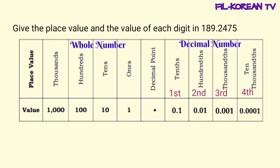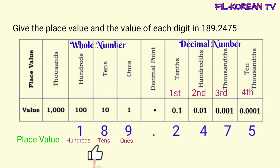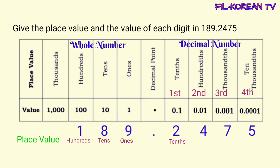Isulat natin yung given number dito sa chart para mabilis nating makita yung place value ng bawat digit. Tingnan natin yung bawat digit galing sa decimal point. Yung first digit sa kaliwa ng decimal point ay nine — ang place value ng nine ay ones. Ang place value ng eight ay tens. At ang place value ng one ay hundreds. Tingnan naman natin ang bawat digit sa kanan ng decimal point. Ang first digit sa kanan ng decimal point ay two — ang place value ng two ay tenths. Ang place value ng four ay hundredths. Ang place value ng seven ay thousandths. At ang place value ng five ay ten thousandths.